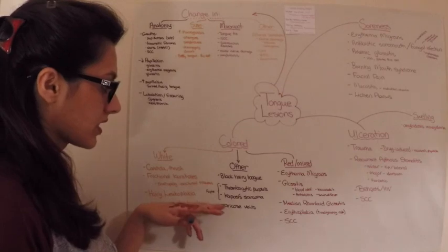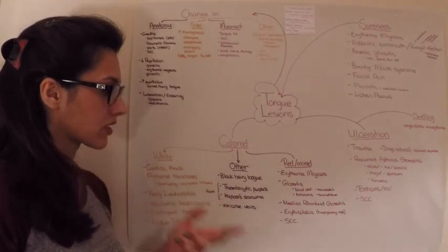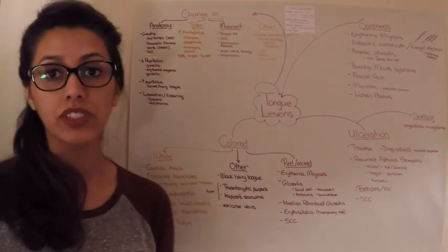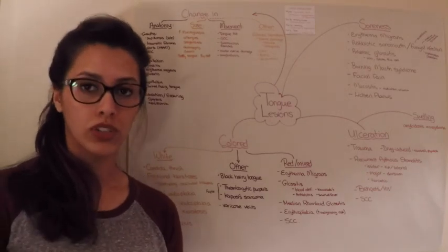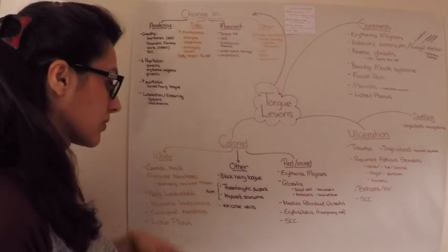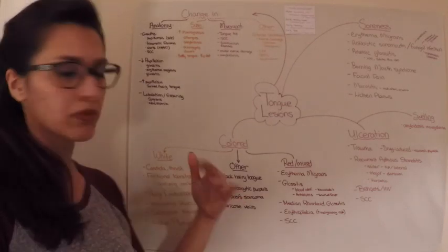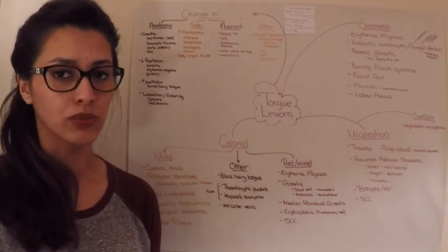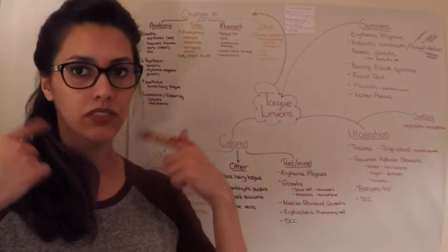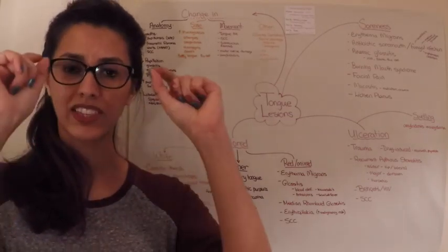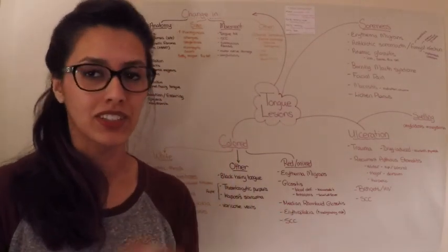Next ones are thrombocytic purpura and Kaposi sarcoma, both of which are purple lesions that can present on the tongue and are associated with HIV. Thrombocytic purpura can also be caused by other things like leukemias and autoimmune diseases. And then varicose veins on the ventral tongue—you can get these really thick veins and it looks scary, but it's actually just varicose veins.